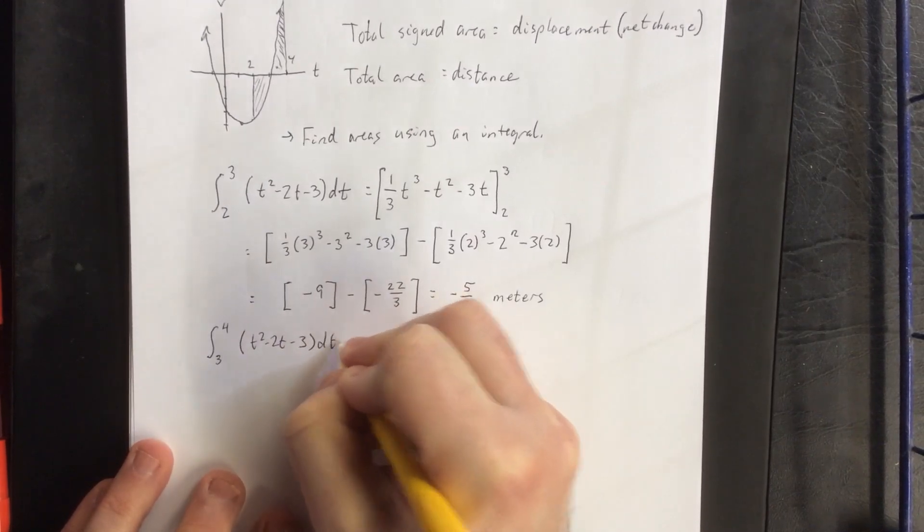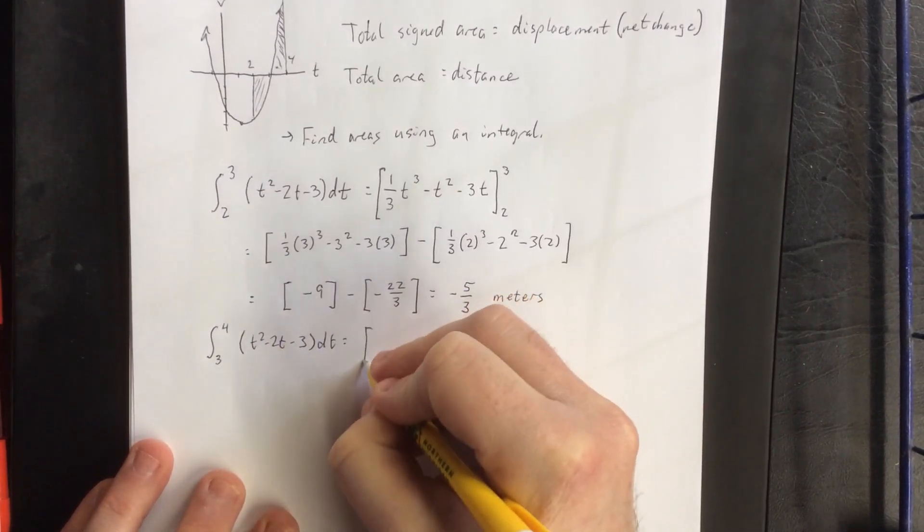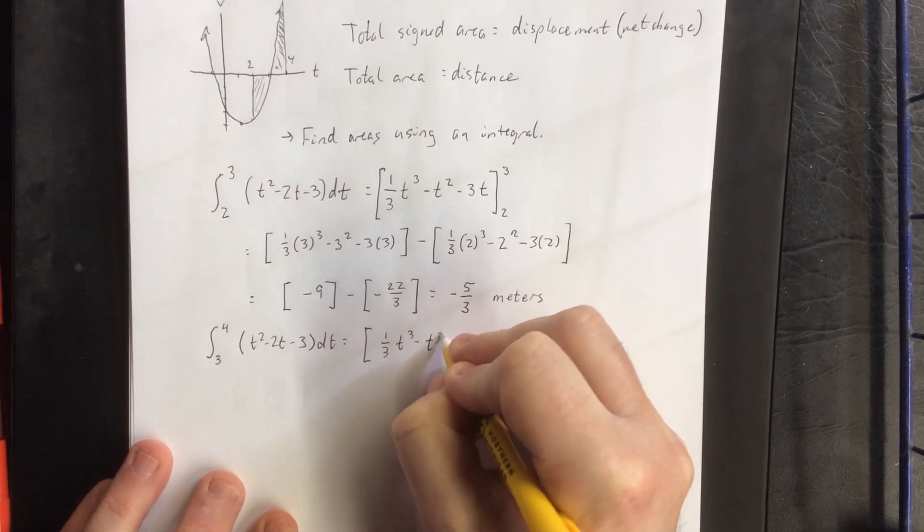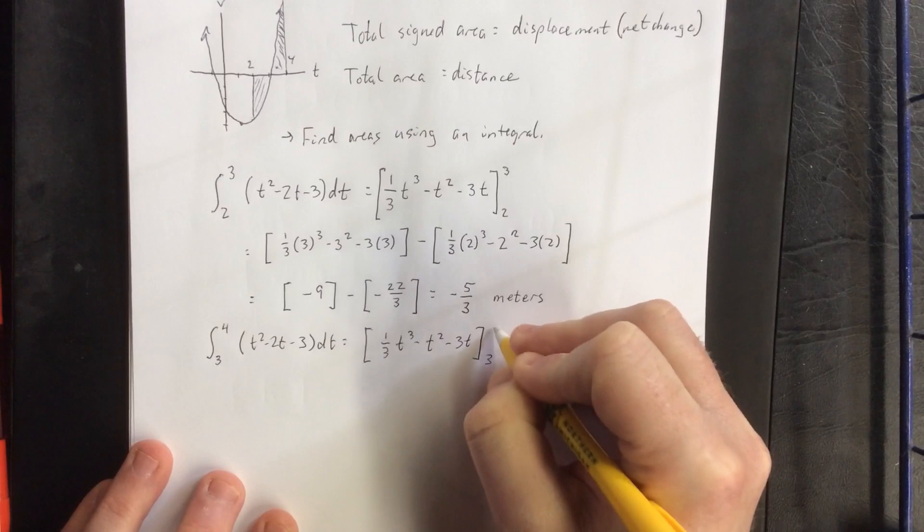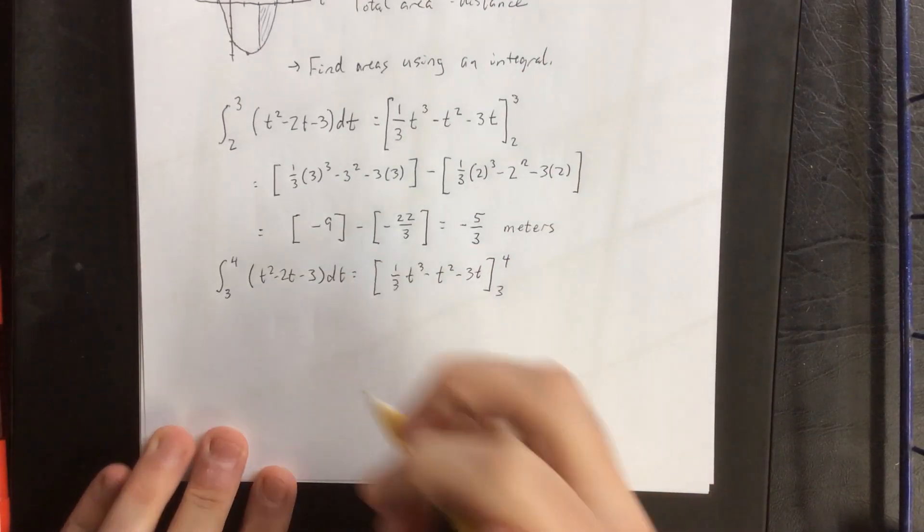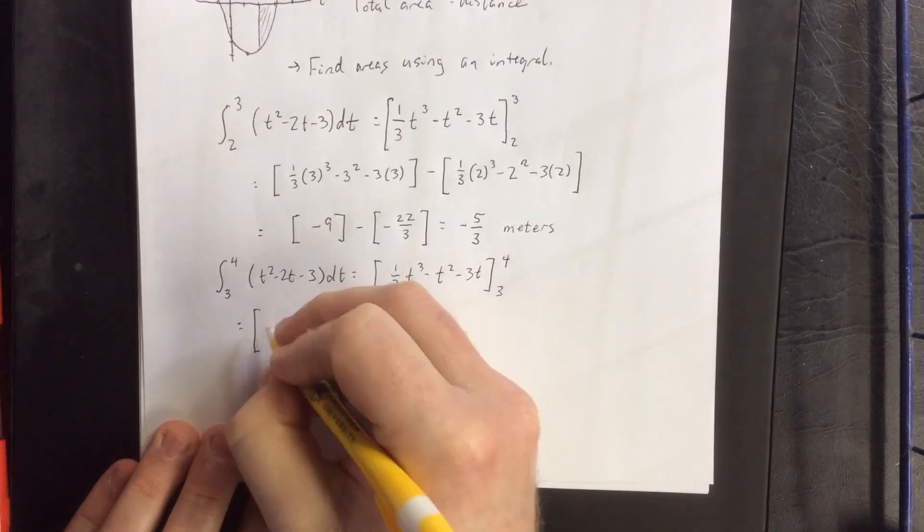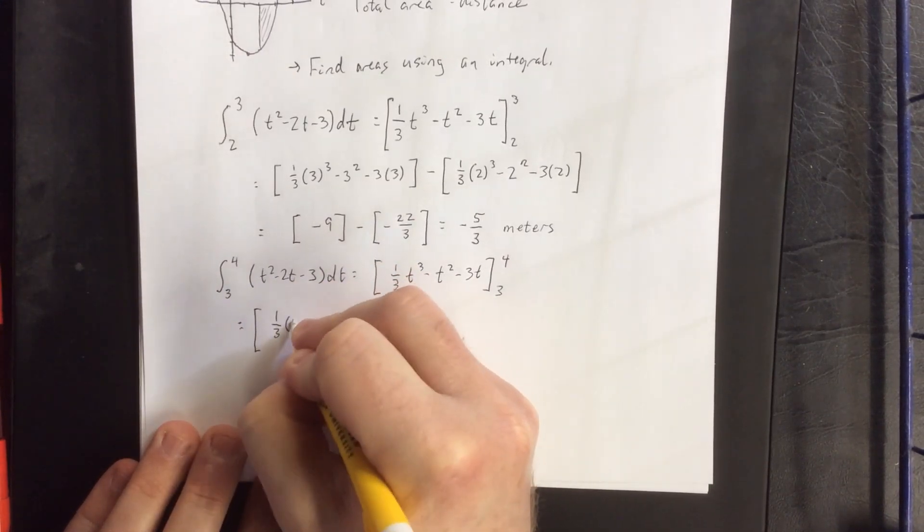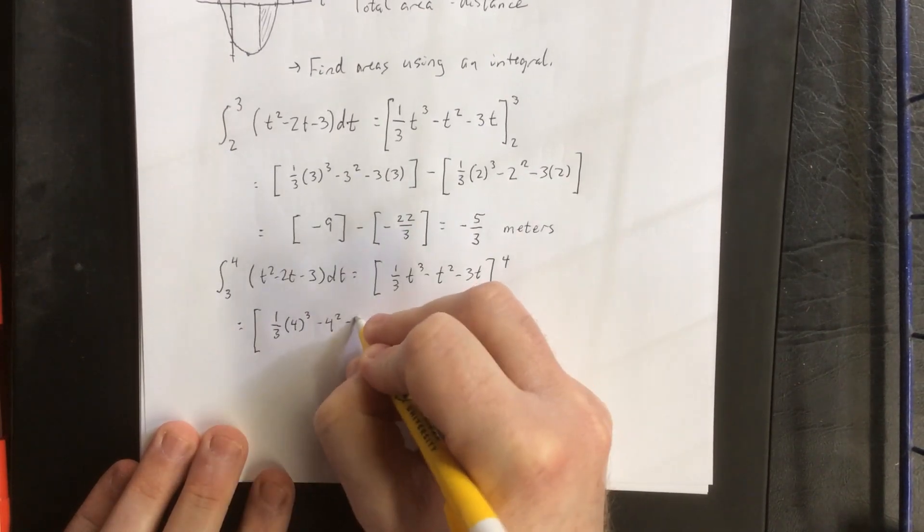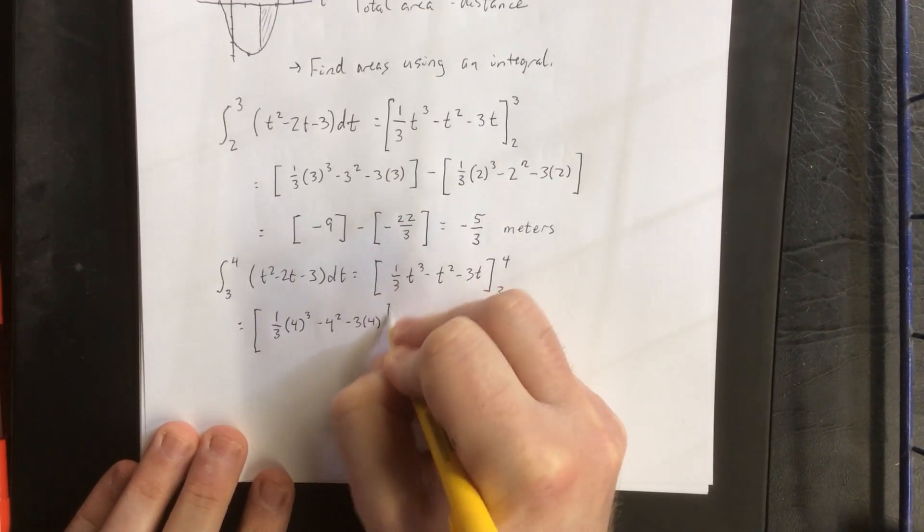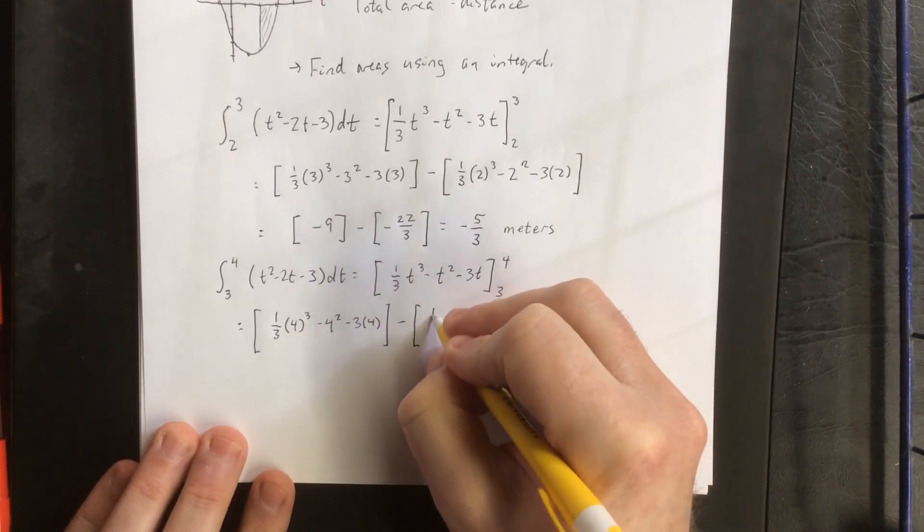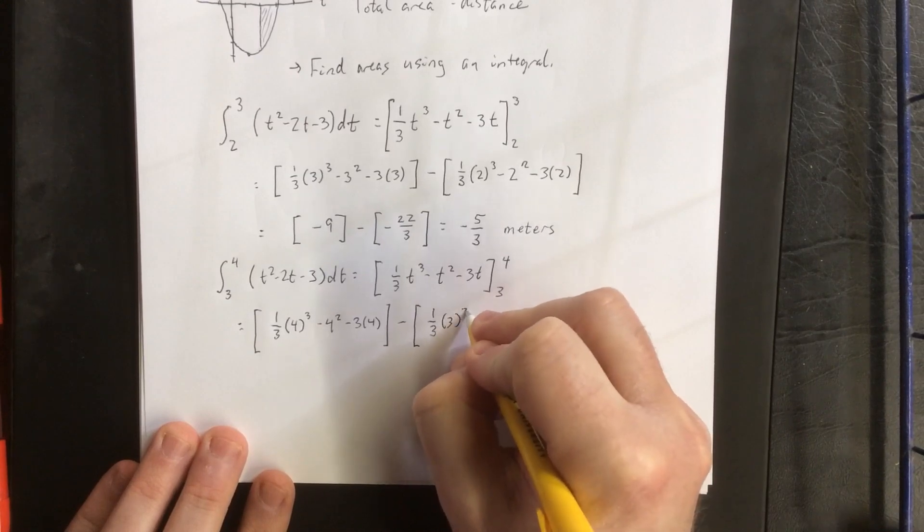And then we'll interpret our result. Now the good news is the antiderivative will be the same. We'll just be plugging in two different bounds. That'll be t = 4 and t = 3. Plugging in t = 4, we'll get ⅓(4³) - 4² - 3(4). Then we'll subtract what we get when we plug in 3, though I'm pretty sure we already plugged in 3 once and got -9.